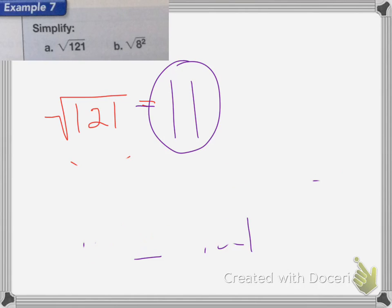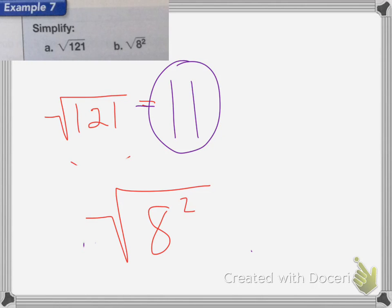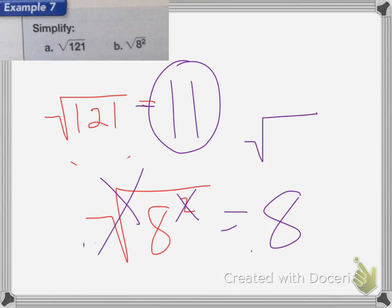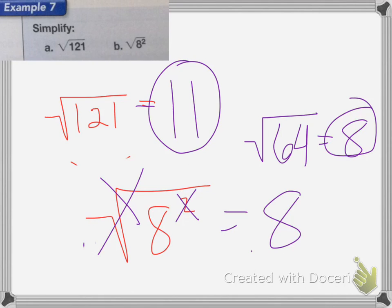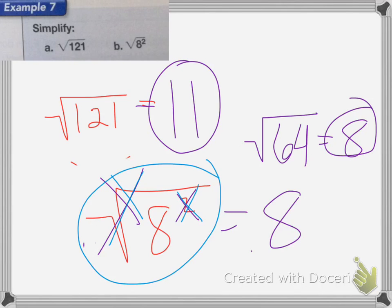The second one says the square root of 8 squared. Since the square root is the inverse operation of squaring, they cancel each other out. The square root cancels the squared, so the answer is just 8. If you're not sure, 8 squared is 64 and the square root of 64 is 8. So if you have a square root and a squared in the same problem, they cancel and you're left with just the number.